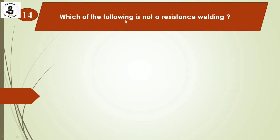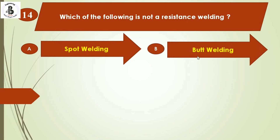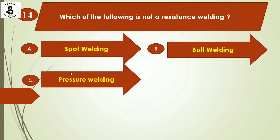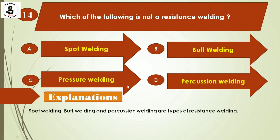The next question: which of the following is not a resistance welding process? Option A: spot welding, Option B: butt welding, Option C: pressure welding, Option D: percussion welding. Spot welding, butt welding, and percussion welding are types of resistance welding, but pressure welding is not a resistance welding process. The right answer is Option C.